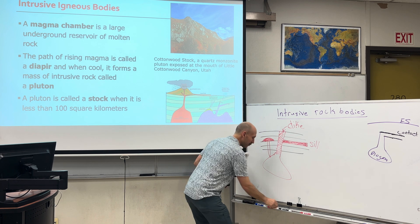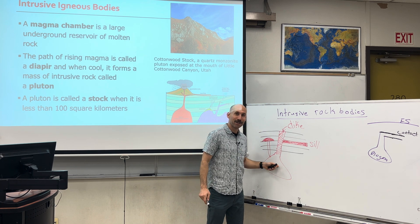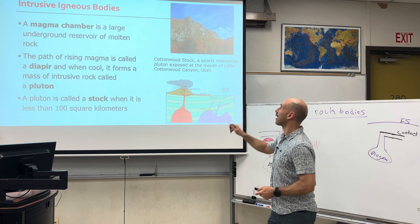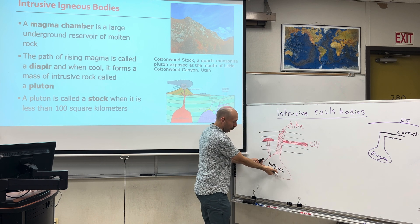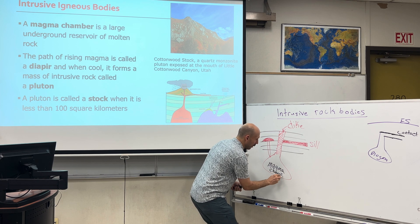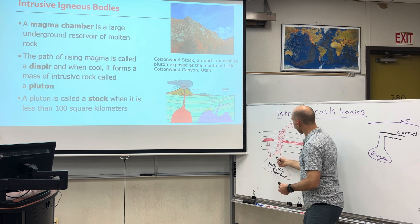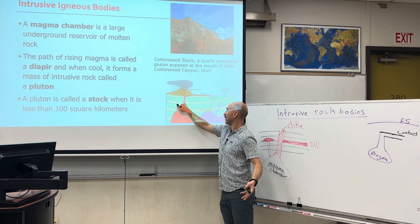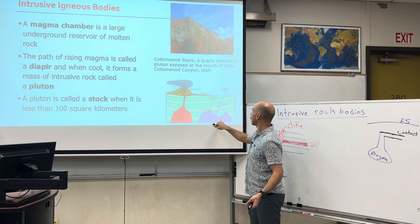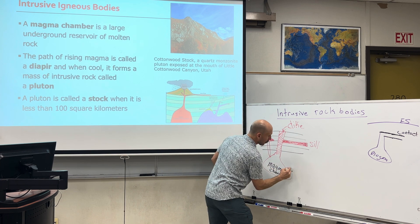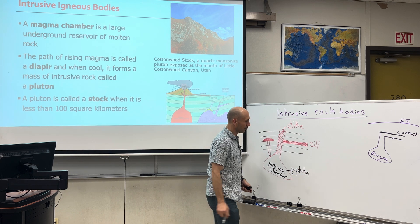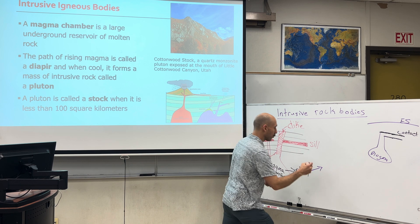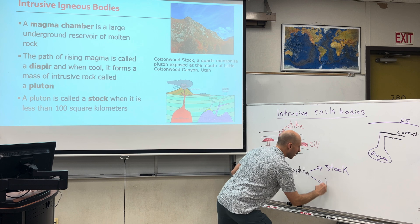Magma is melt that occurs underneath the surface of the earth. Magma hangs out in a magma chamber — an underground pool or reservoir of molten material. When magma starts to rise, that rising magma is called a diapir. When that diapir solidifies, it would be considered a dike. When the magma chamber solidifies, it's a pluton. A pluton that is less than 100 square kilometers is called a stalk, and a pluton greater than that is called a batholith.